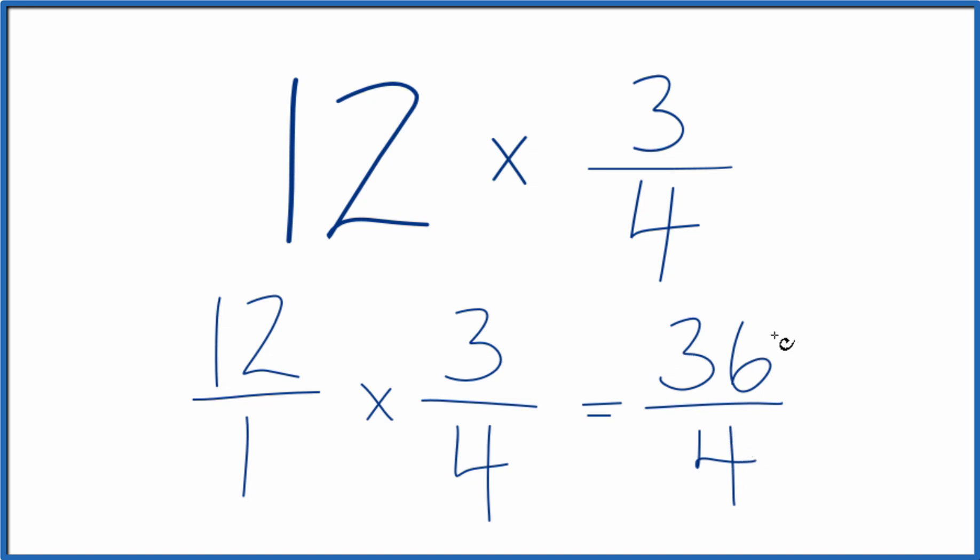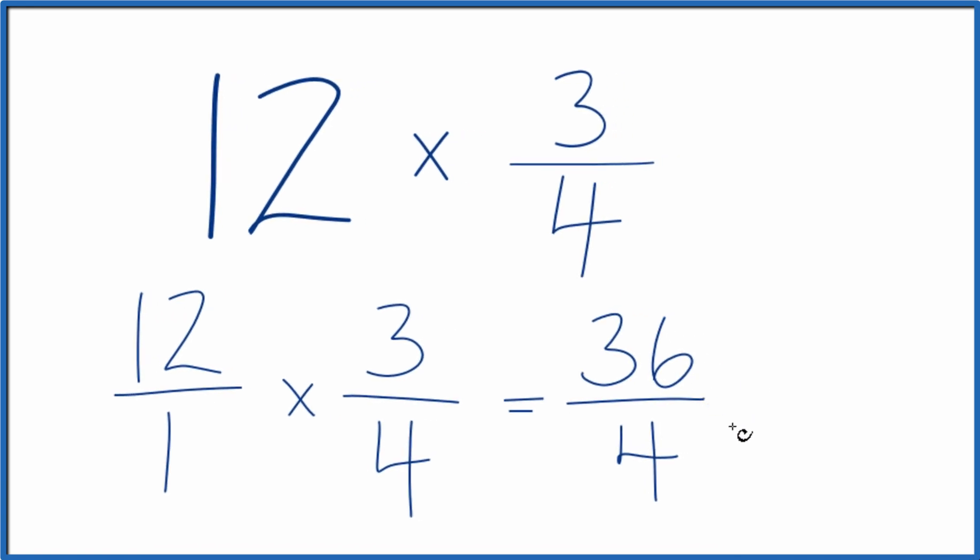But 4 divides evenly into 36. So 4 times 9, that equals 36. So we could say that 12 times 3 fourths equals 9.